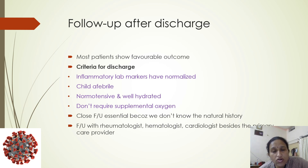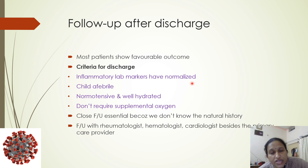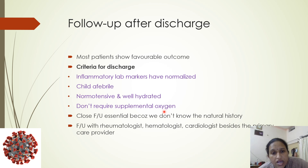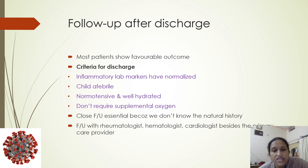Most patients, if treatment is started in time, show a favorable outcome. Criteria for discharge include normalization of inflammatory laboratory markers such as ferritin, procalcitonin, interleukin, CRP, and ESR; the child is afebrile, normotensive, and well hydrated; and does not require supplemental oxygen. Close follow-up is essential because the natural history of MIS is not fully known. Follow-up with a rheumatologist, hematologist, and cardiologist, in addition to the primary care provider, is very important.